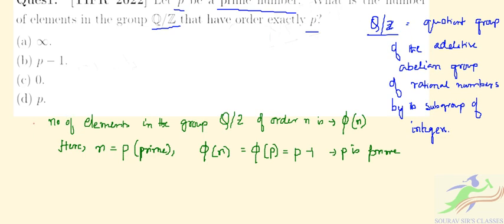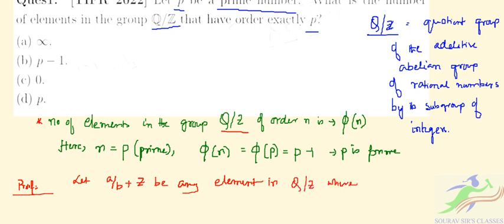So here we have seen that the number of elements in the group of order n is phi of n. For this proof, let us consider that A by B plus Z be any element in the quotient group, where A by B is expressed in the lowest terms.